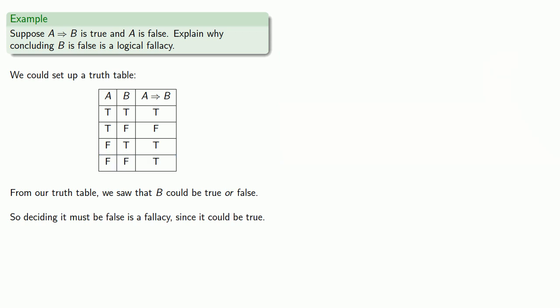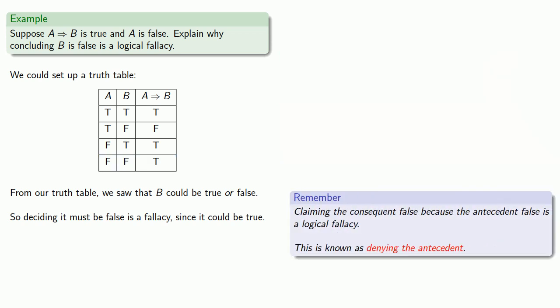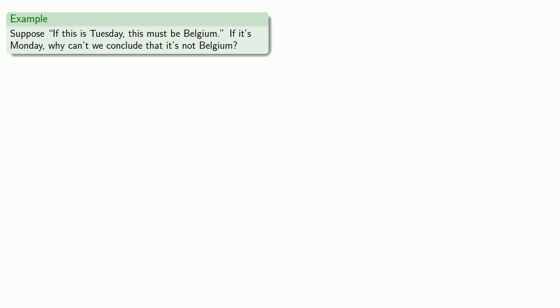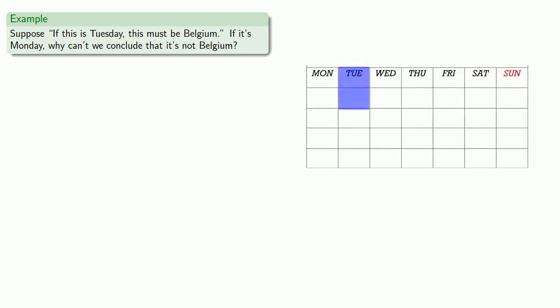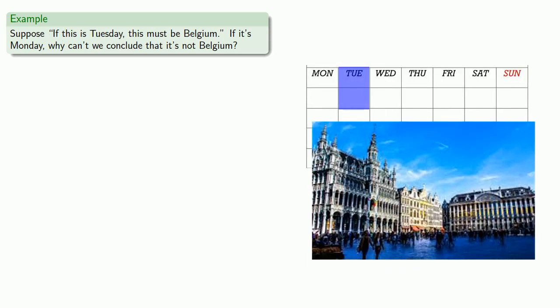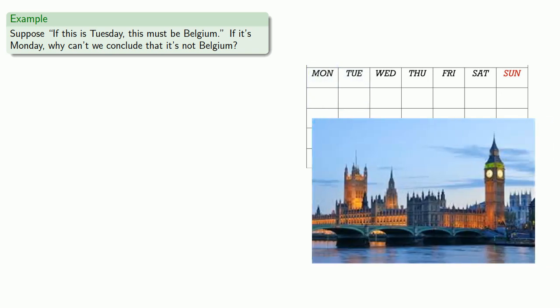This fallacy is so common it actually has its own name. Claiming the consequent false because the antecedent is false is a logical fallacy known as denying the antecedent. For example, suppose 'if this is Tuesday, this must be Belgium.' If it's Monday, why can't we conclude that it's not Belgium?